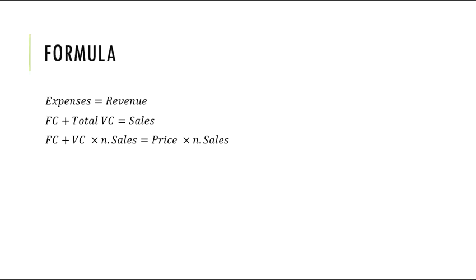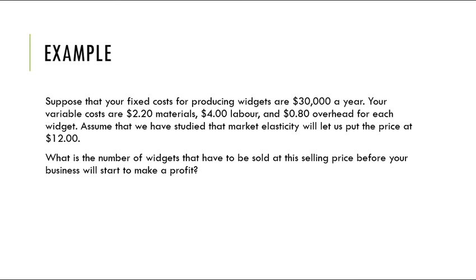Let's look at an example. Suppose your fixed cost for producing widgets is $30,000 a year. Your variable costs are $2.20 for materials, $4.00 for labor, and $0.80 overhead for each widget. Assume that market elasticity will let us set the price at $12. What is the number of widgets that have to be sold at this selling price before your business will start to make a profit?